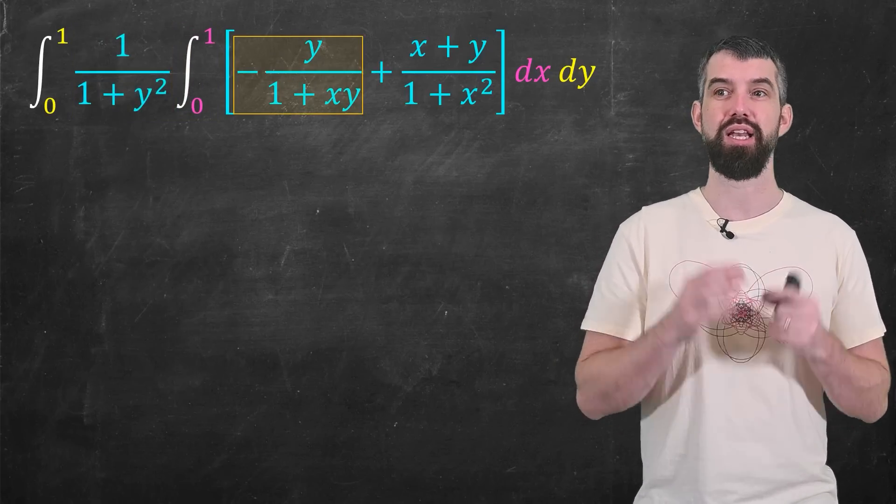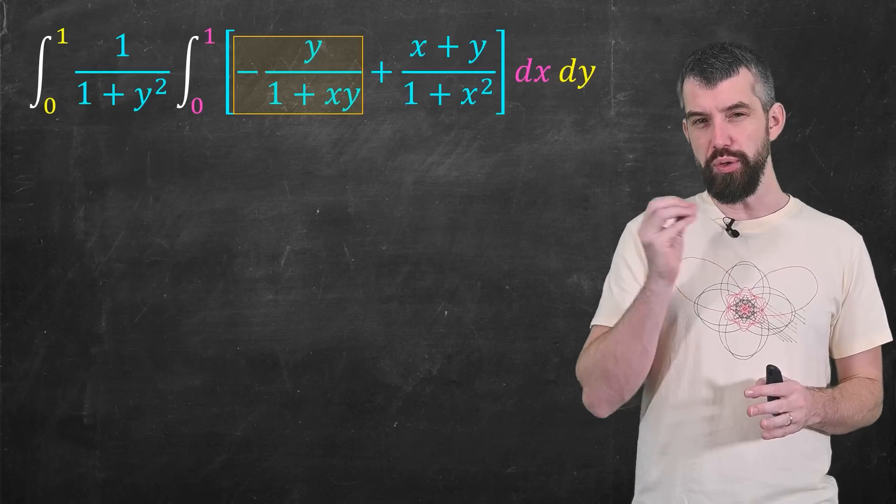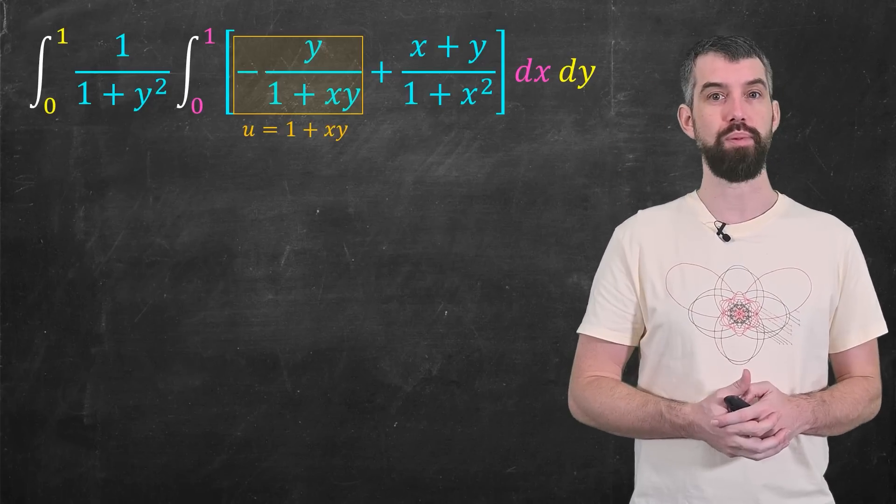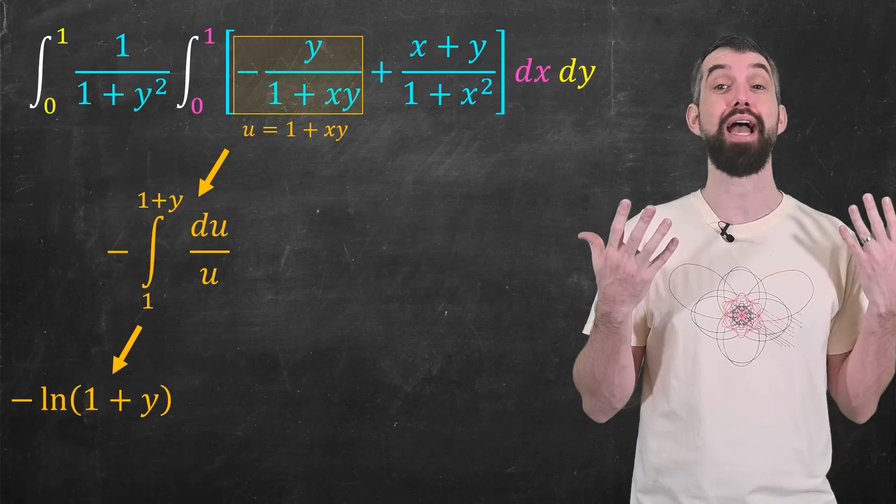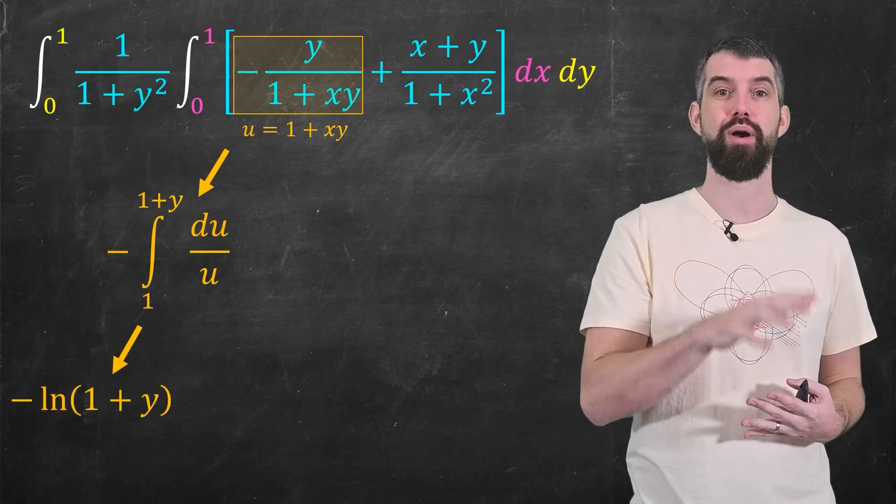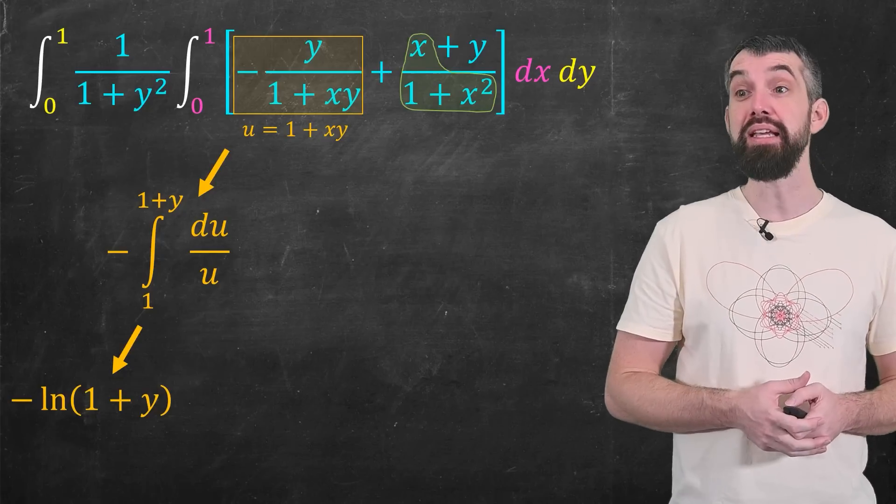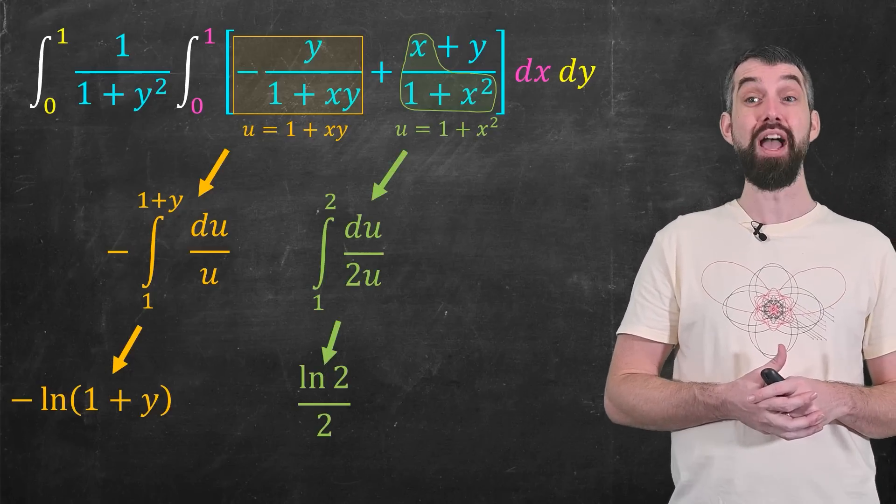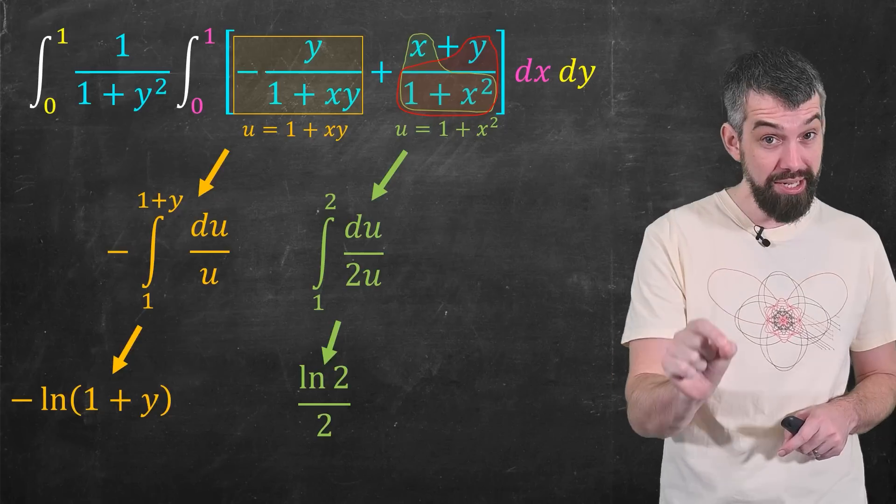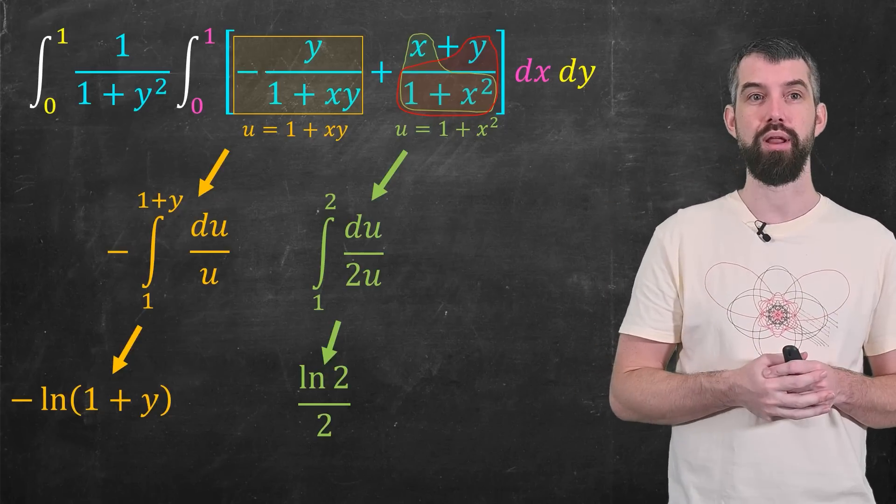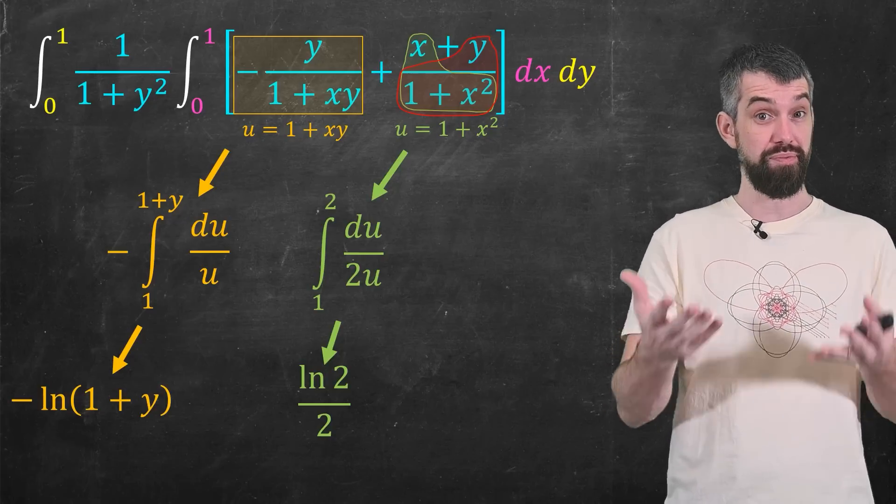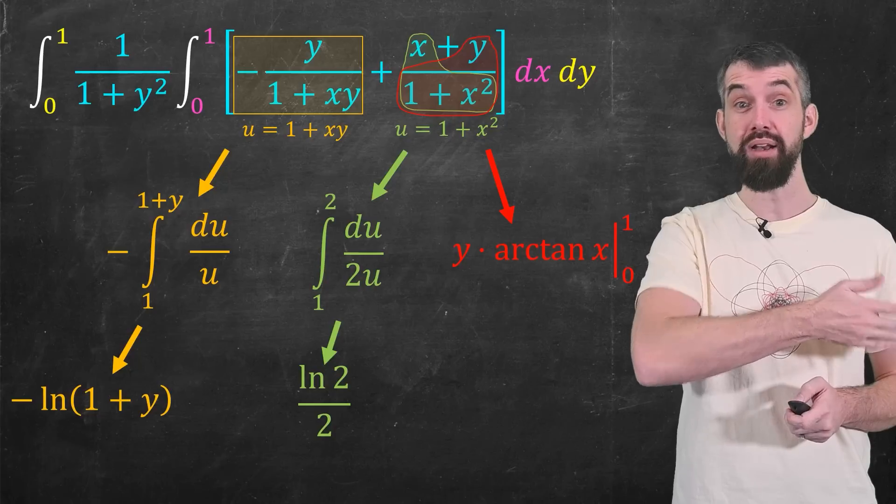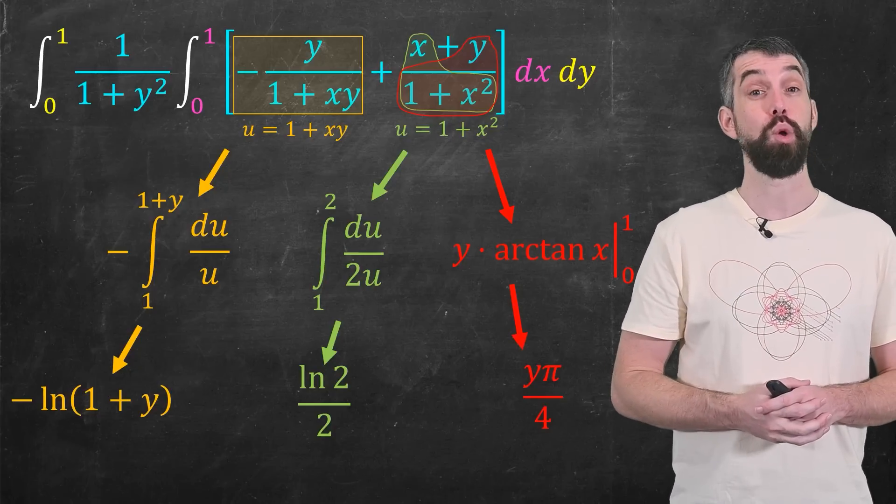So the first thing I need to deal with is this negative y over 1 plus xy. I'm doing an integral with respect to x. So y is just a constant here. So just imagine it's like 1 plus 3x or something. I just do a u sub. So u is 1 plus xy, this is going to be a du over u, and what do I get? I get an arctan out of it with a negative sign. Next one is x over 1 plus x squared, a very easy u substitution for my calculus students to do. And if I plug this in, I get another logarithm, logarithm 2 over 2. And then the final one to do is y over 1 plus x squared. Again, y is a constant when I'm integrating with respect to x. Something over 1 plus x squared, that integral is arctan. The y comes along for the ride, evaluated at 1, you just get the value of pi over 4, evaluated at 0, you get 0. So this is y pi over 4.